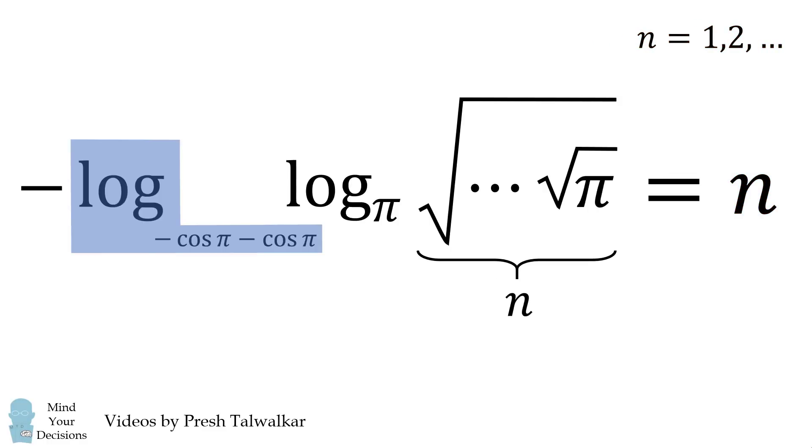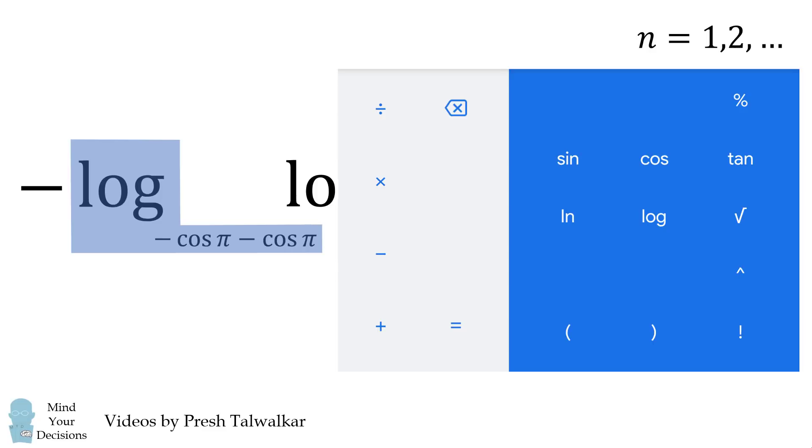The logarithm function is using a base of 2. Log base 2 doesn't appear on a standard Android calculator. So how do we get around this?